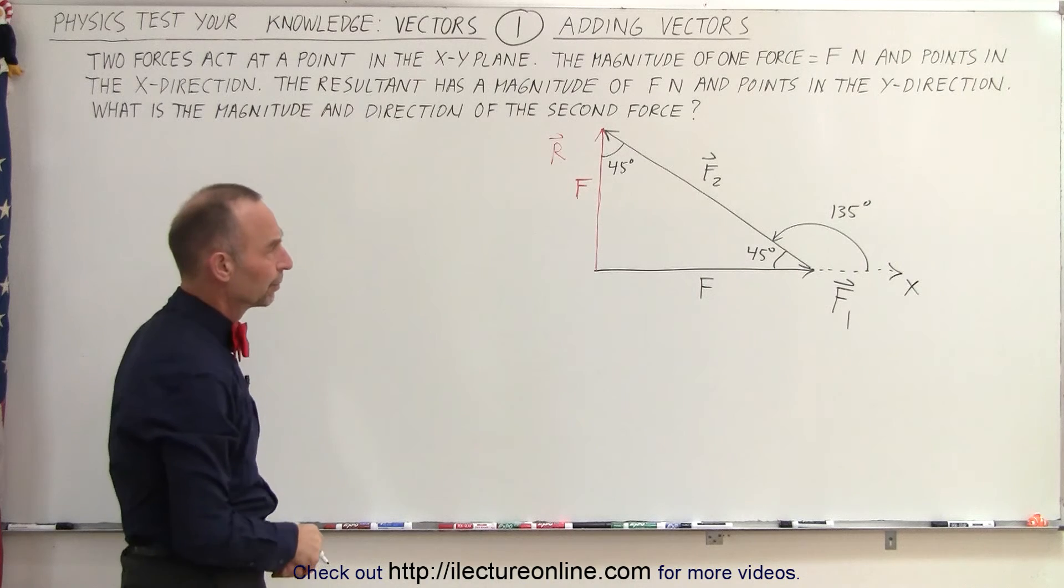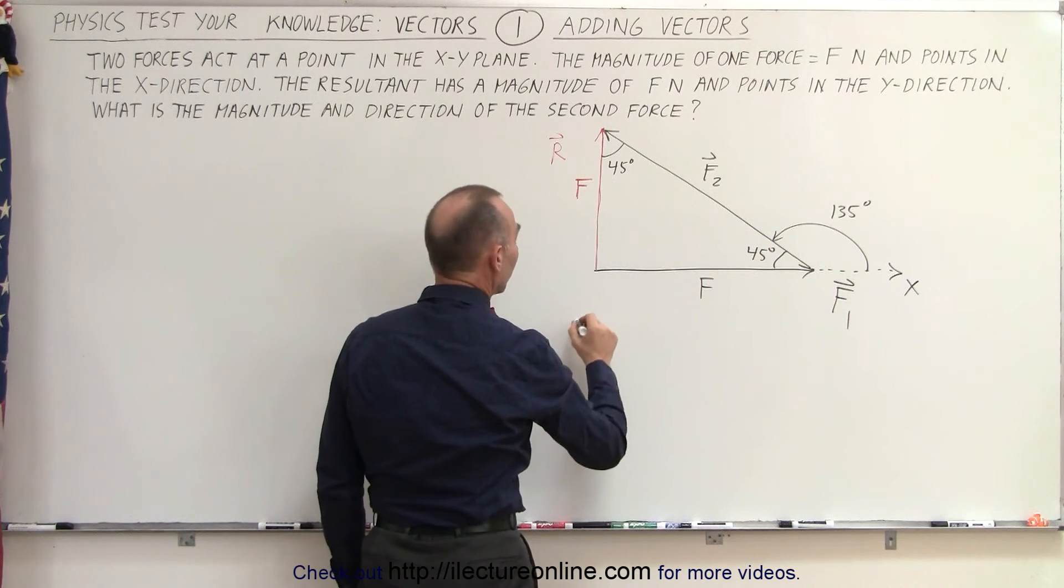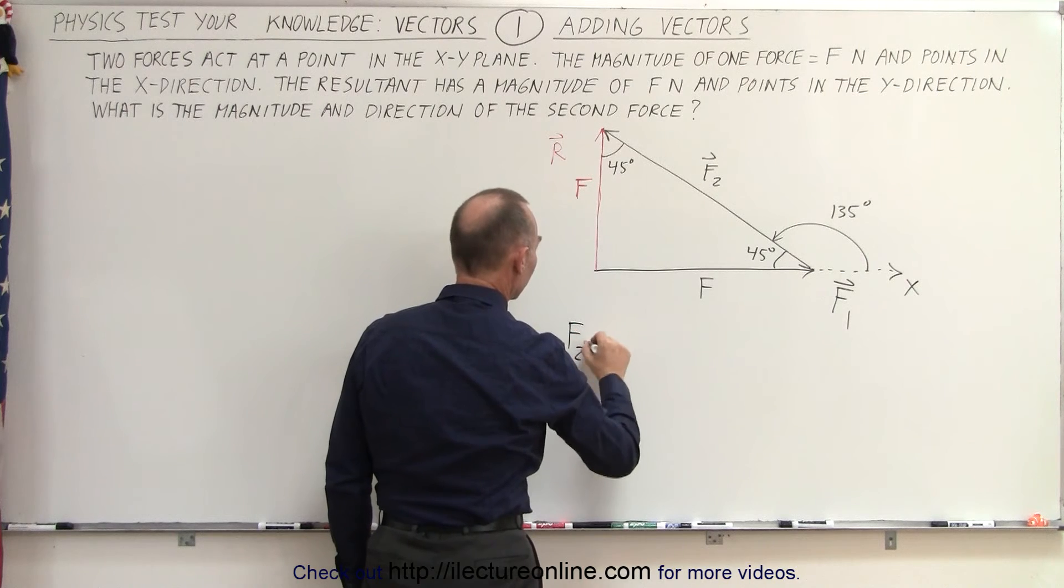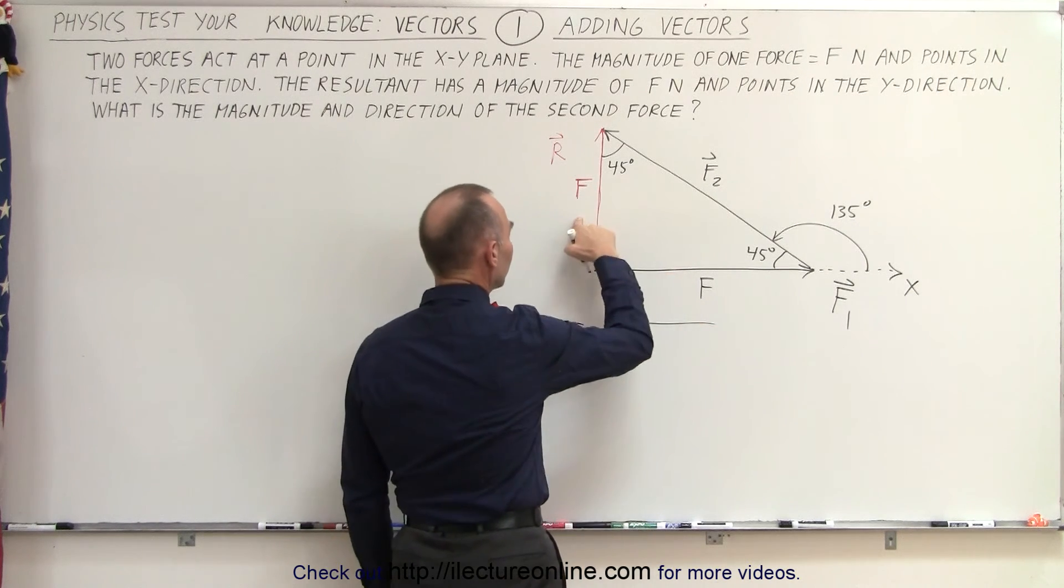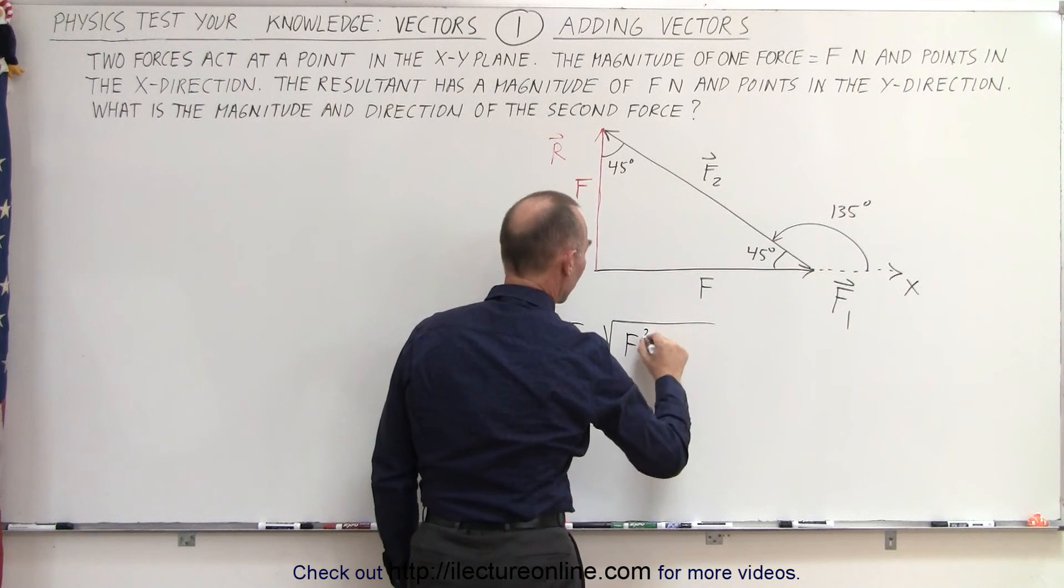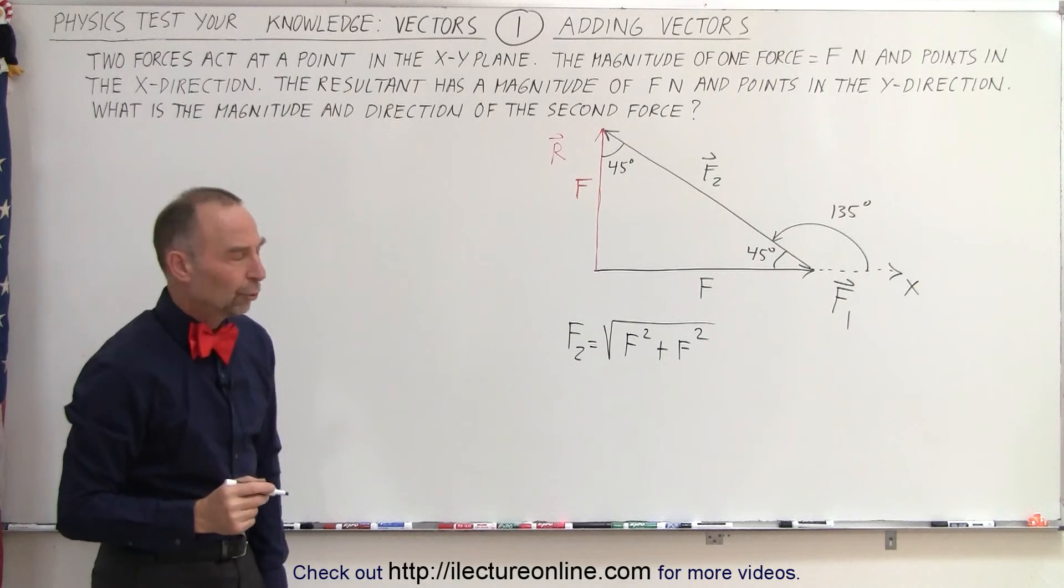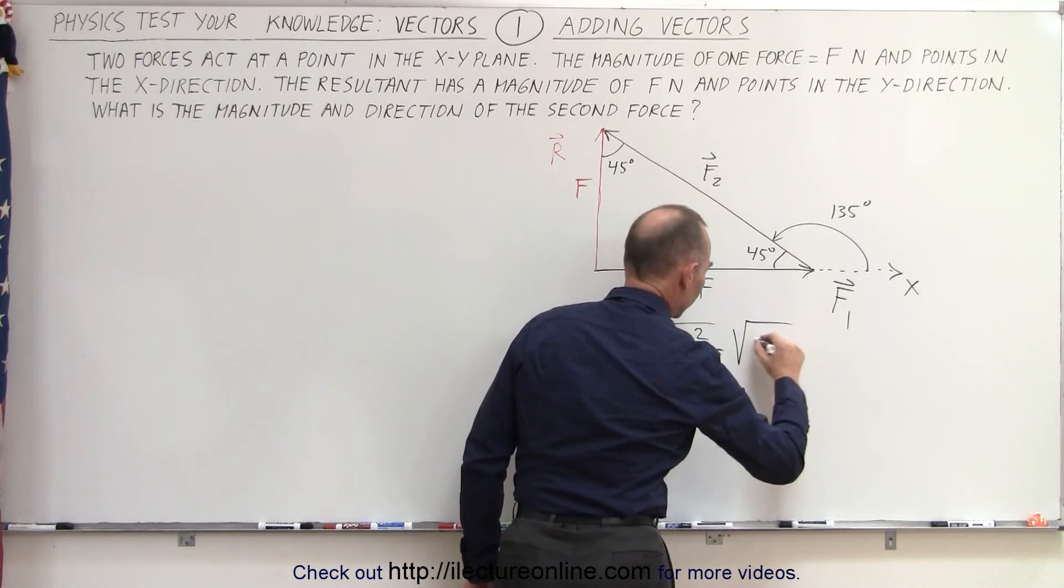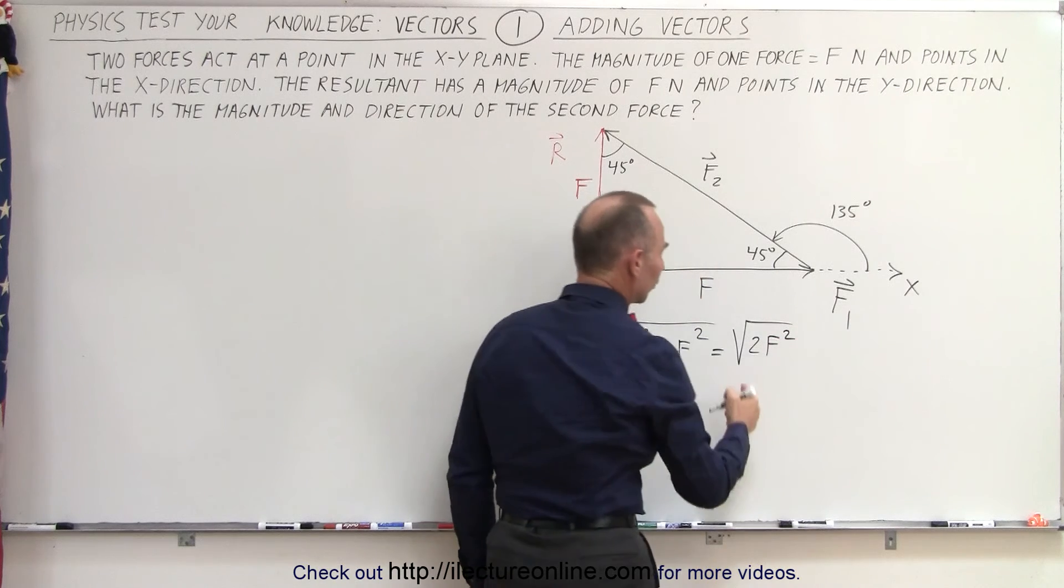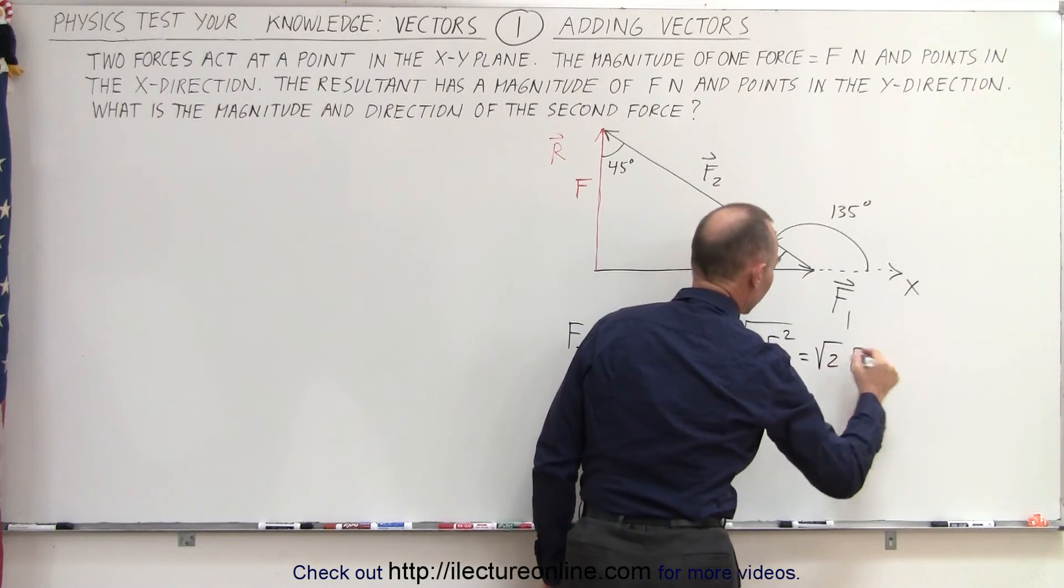What about the magnitude? Well, we could use the Pythagorean theorem that tells us that the magnitude of f2 must equal the square root of the sum of the squares of the magnitude of the two legs, which means f squared plus f squared. Notice we can write this as the square root of 2f squared, and of course the square root of f squared is f. So this is equal to the square root of two times f for the magnitude.